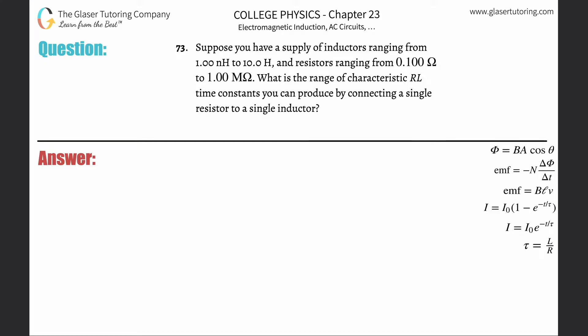Number 73. Suppose you have a supply of inductors ranging from 1 nanohenry to 10 henrys, and resistors ranging from 0.1 ohms to 1 megaohm. What is the range of characteristic RL time constants you can produce by connecting a single resistor to a single inductor? This is basically a mathematical trick that we can do.